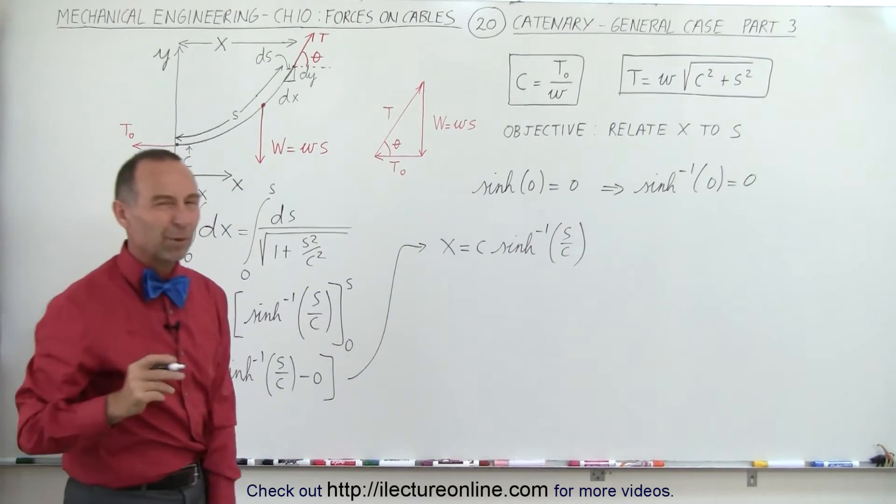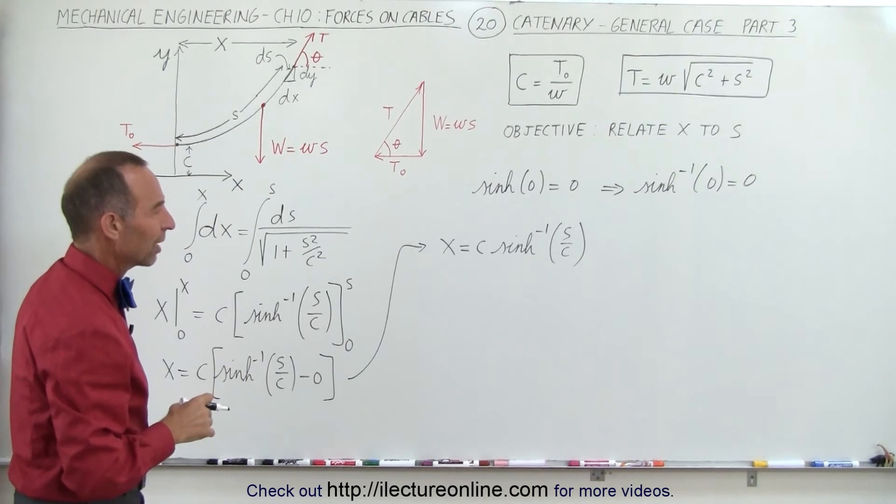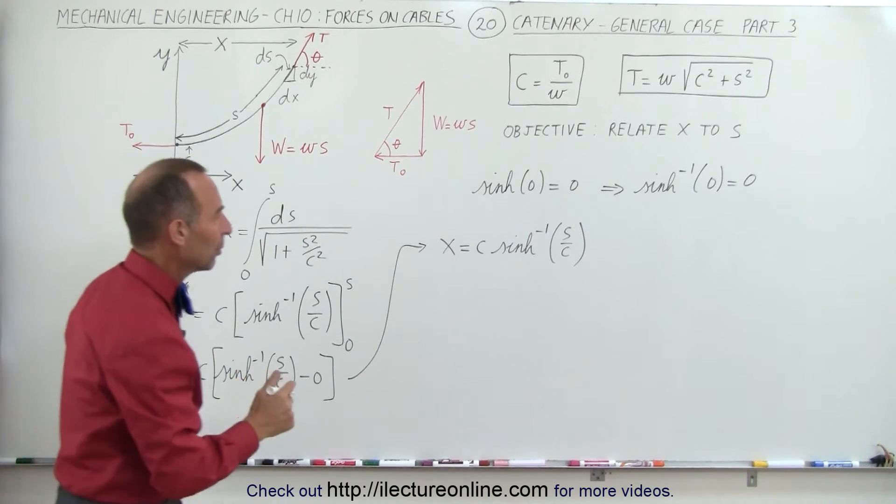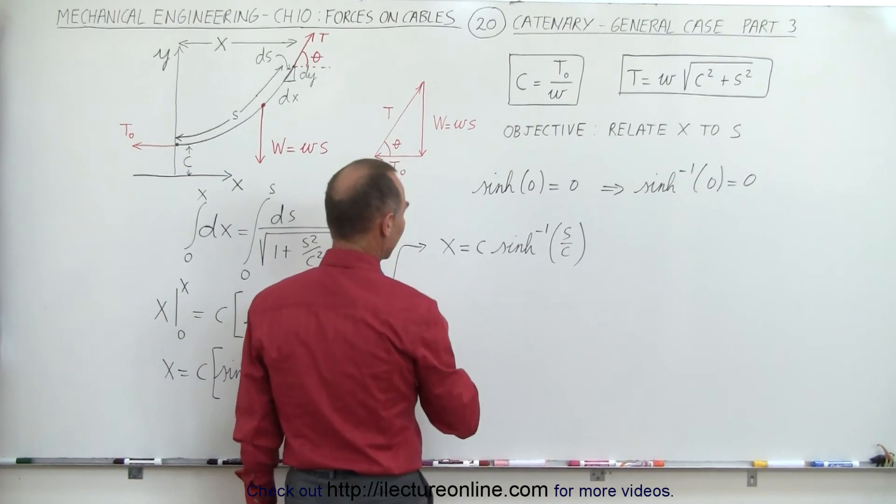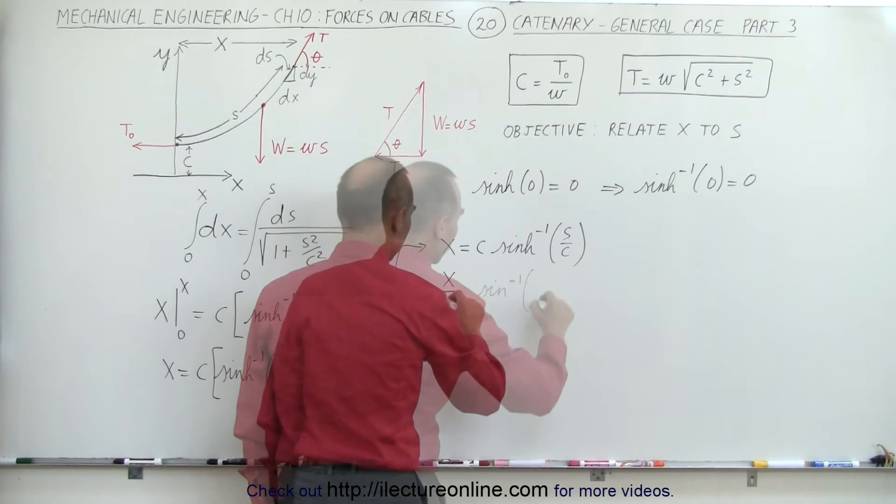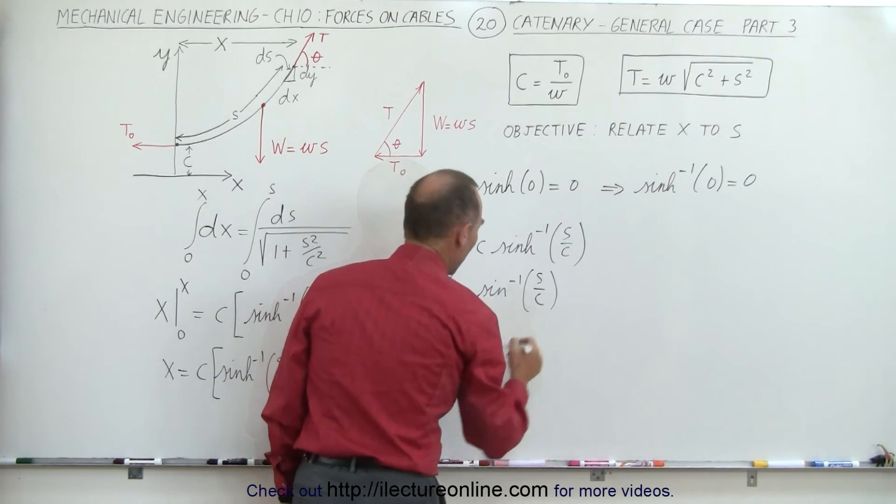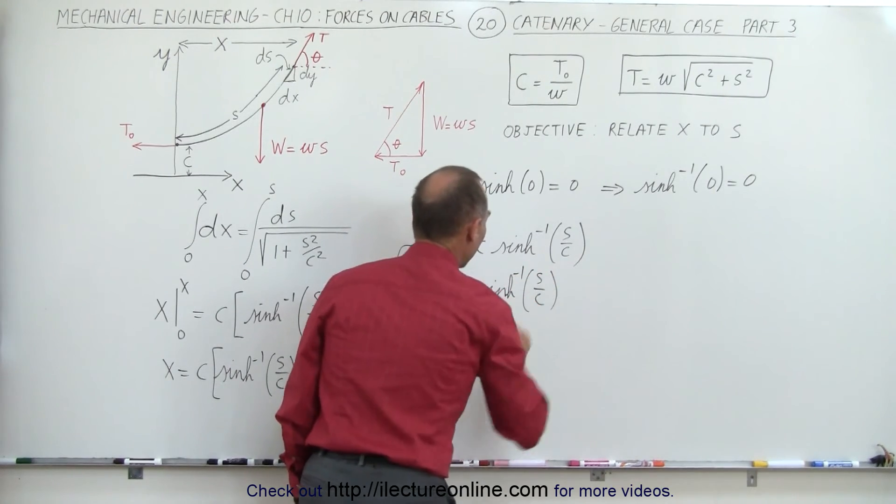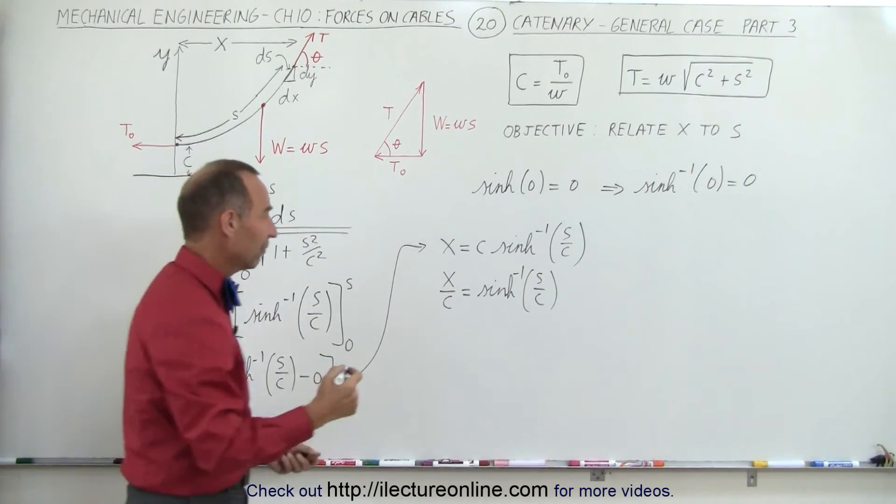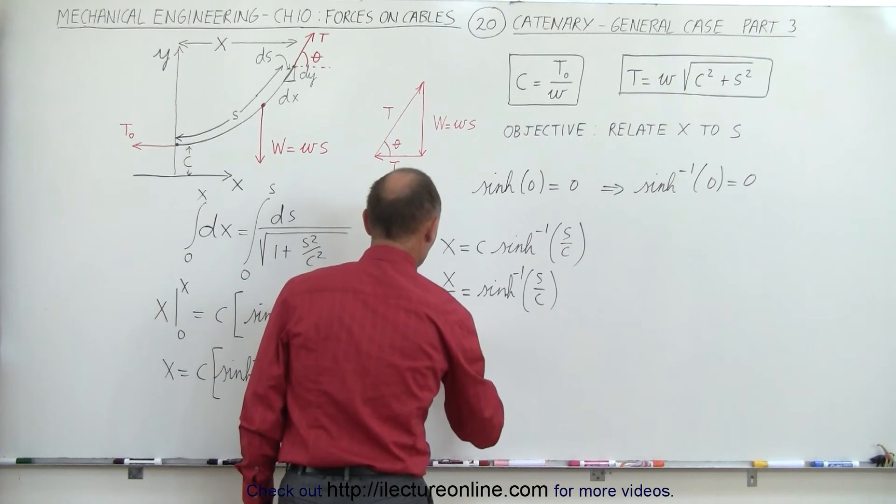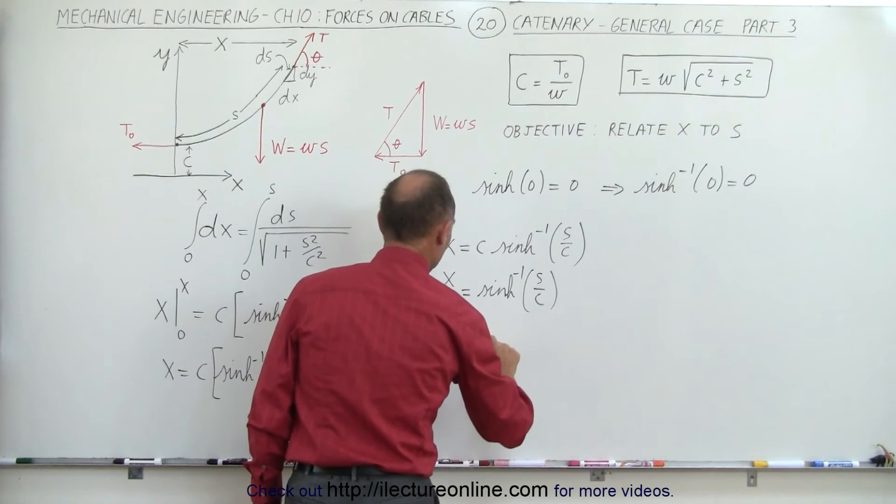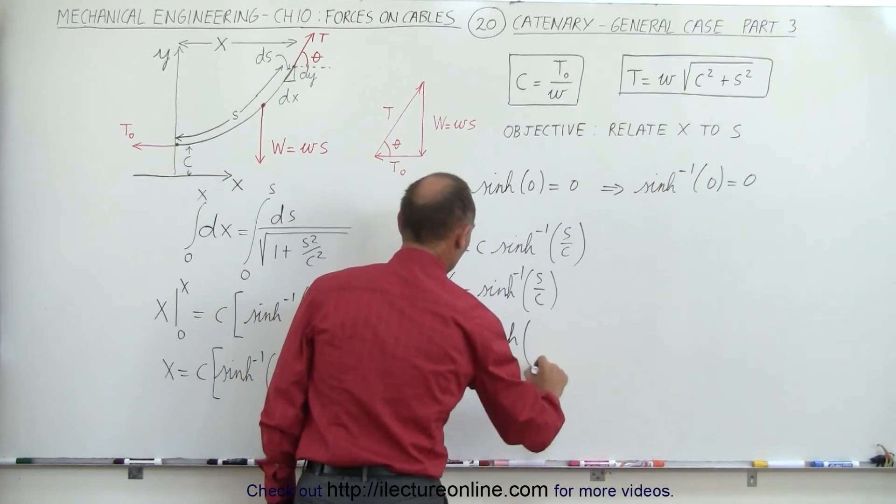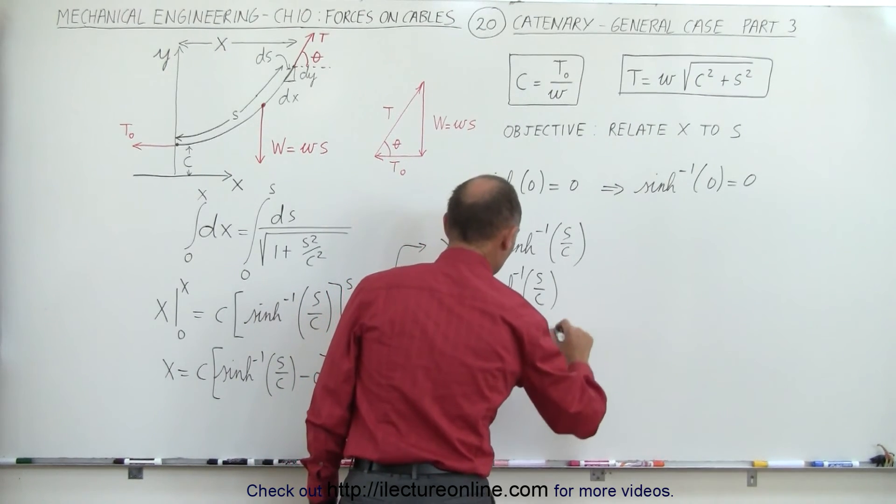But we don't want to express it in terms of the inverse hyperbolic sine. We want the hyperbolic sine. So what we do now is we divide both sides by c, and now we can reverse that. So therefore we can conclude that s over c is equal to the hyperbolic sine of the quantity x over c.